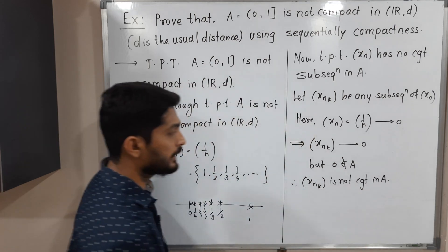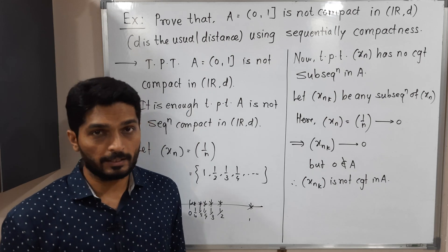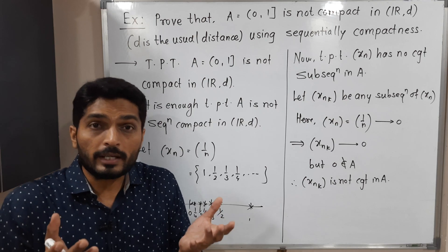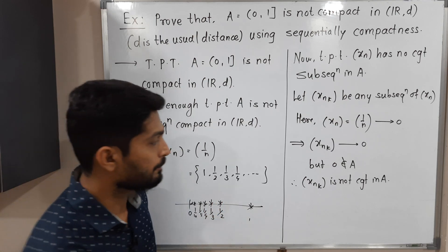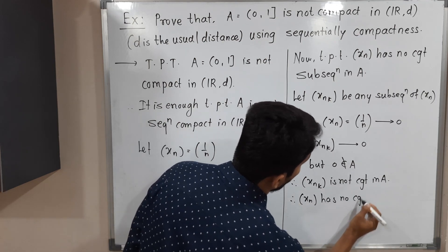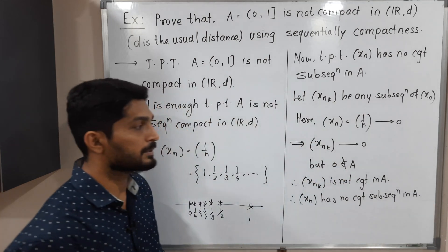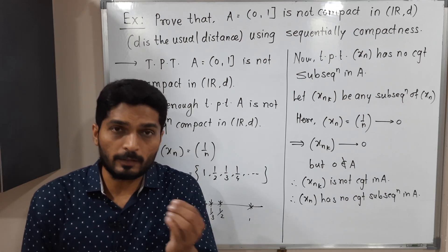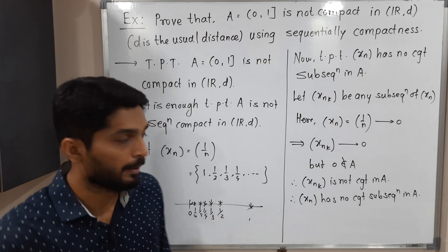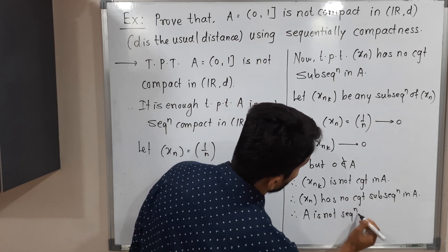Therefore Xₙₖ is not convergent in A, since it converges to 0 but that point does not lie in A. Since we took any arbitrary subsequence of Xₙ, we conclude that Xₙ has no convergent subsequence in A. We have found one sequence with no convergent subsequence in A, therefore A is not sequentially compact.